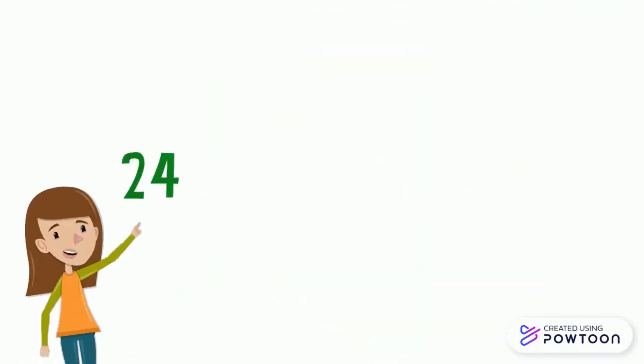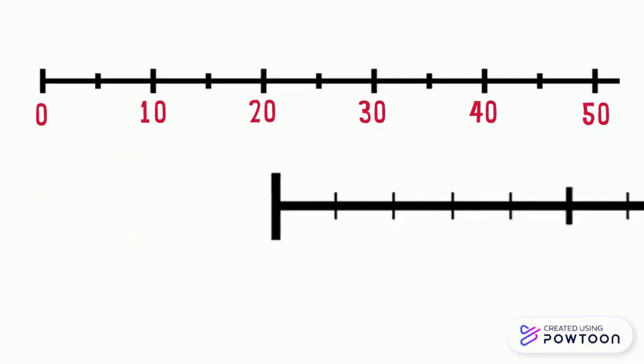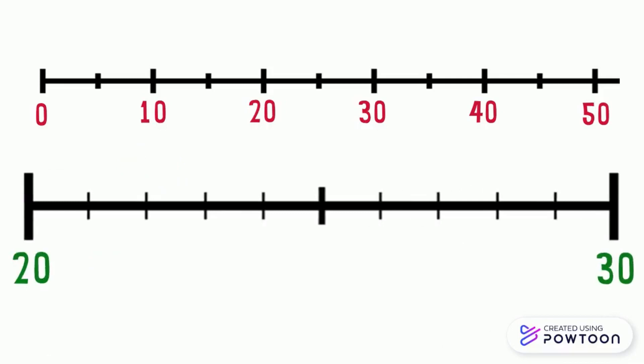If we want to place the number 24 on the number line, we can use the number line graduated 10 by 10 or the one that is graduated one by one. We know that 24 is between 20 and 30, so we should find the number 20, then count 21, 22, 23, 24. So we have found the position of the number 24.